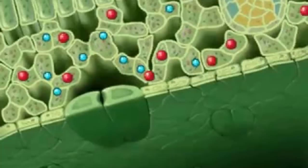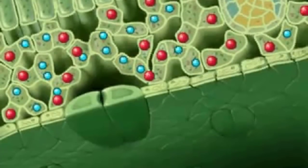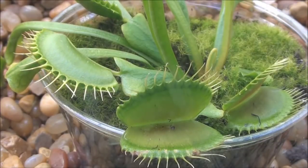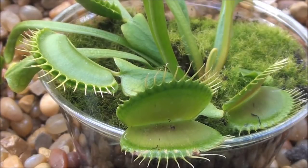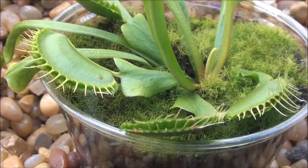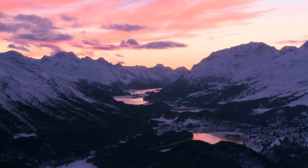At night, the stomata close because plants do not want to lose too much water — they don't want to dehydrate. The guard cells are the cells that cause the opening and closing to happen. There are many types of leaves adapted to different environments: pine needles are adapted for extremely cold temperatures, being very waxy and acidic to hold water well; cacti have spines to prevent water loss; and venus fly traps are adapted to low-light or low-nutrient environments, supplementing their diet by eating animals.